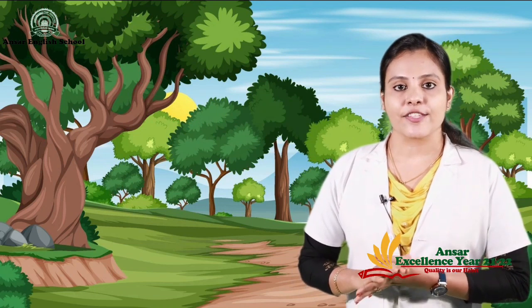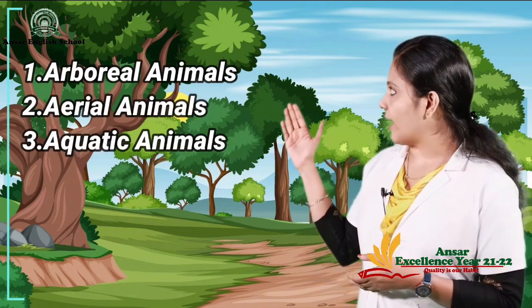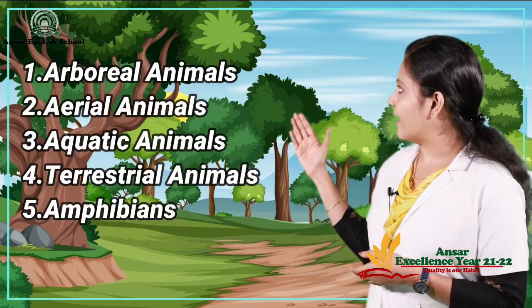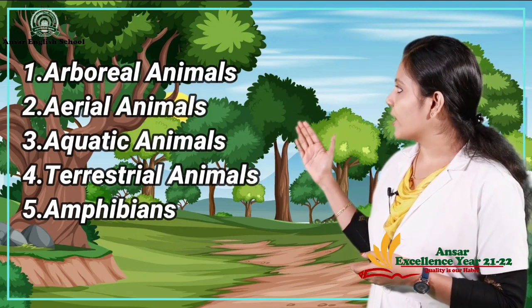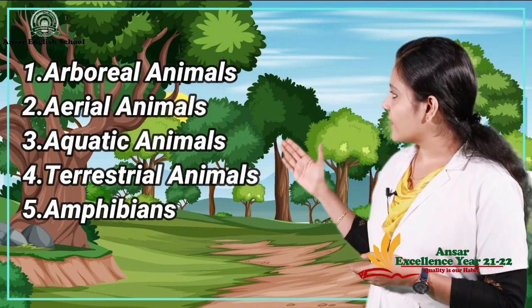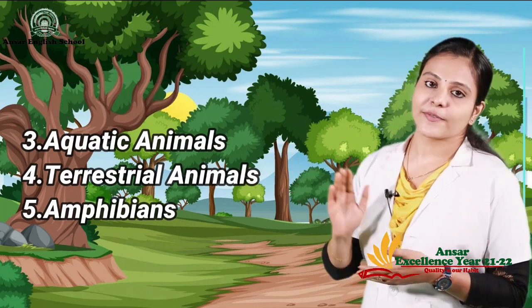Animals are classified into five groups according to their habitat: arboreal animals, aerial animals, aquatic animals, terrestrial animals, amphibians.